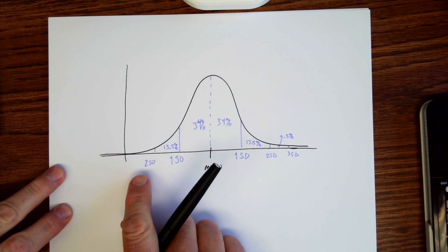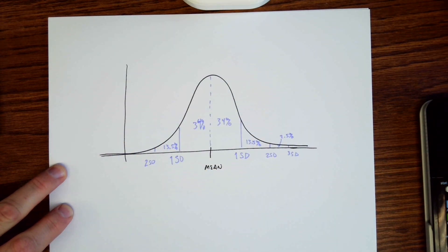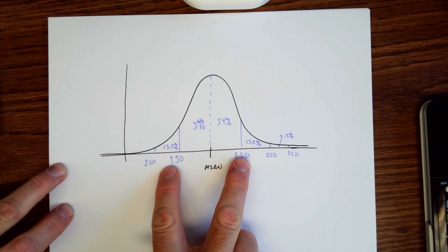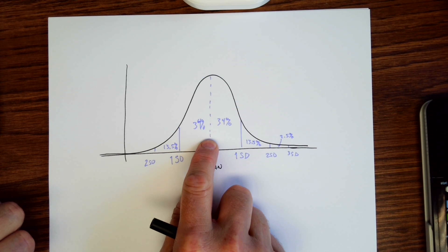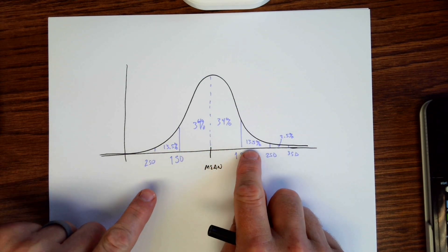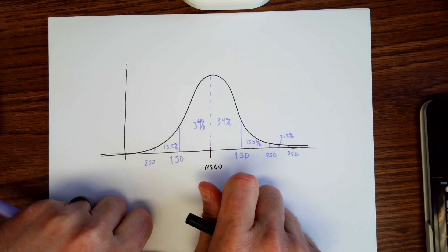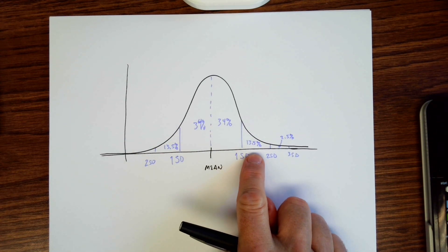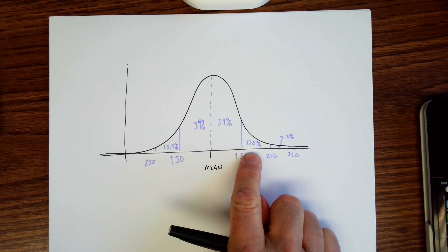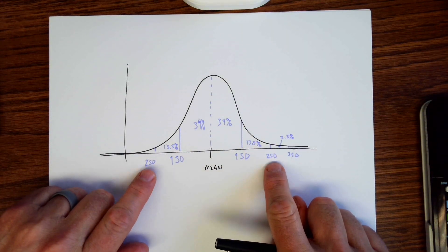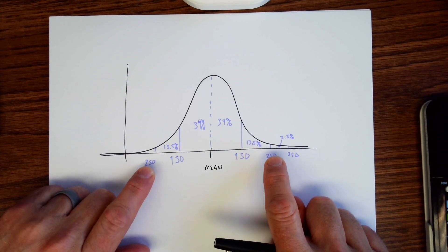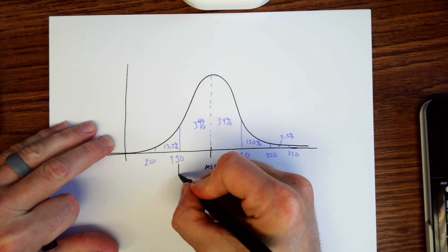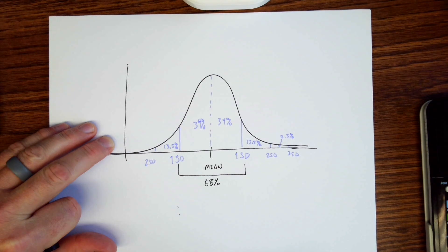If it is normal — if we graph the histogram and it has this basic shape — then we know that within one standard deviation of the mean we have 68% of the data. From one standard deviation above to one standard deviation below, that's 34% in either direction. Two standard deviations means 34% plus an additional 13.5%, so going two standard deviations above and below covers 95% of the data theoretically.